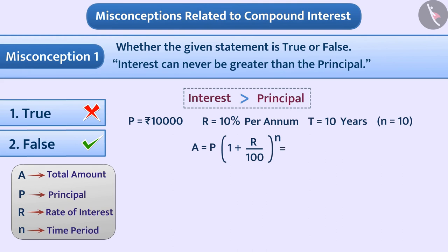In this way, A is equal to 10,000 rupees multiplied by (1 plus 10 by 100) raised to the power 10, which is equal to rupees 10,000 multiplied by (1 plus 1 by 10) raised to the power 10.